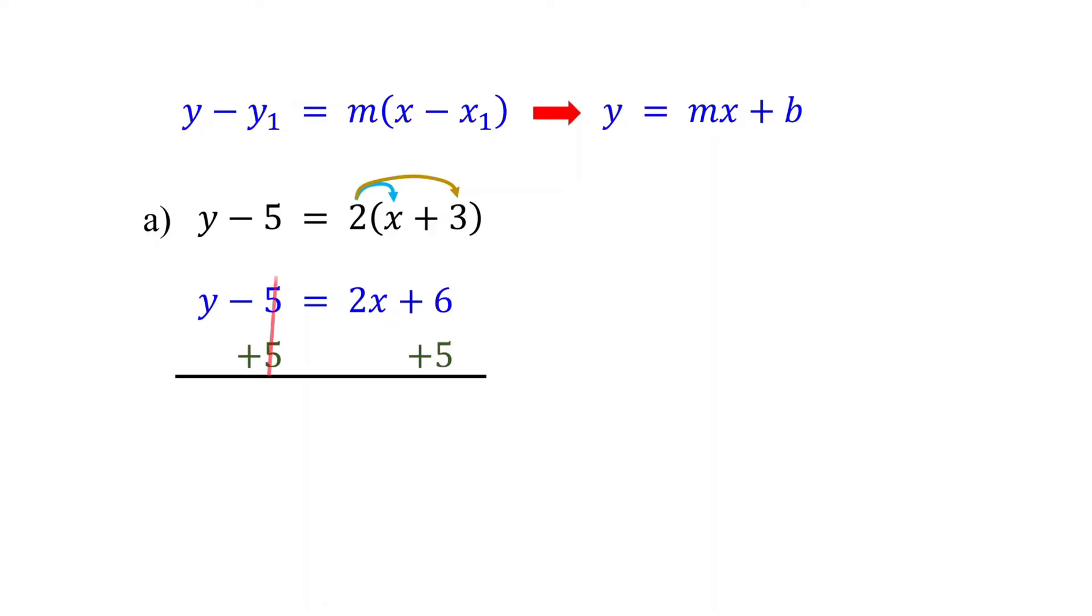On the left side, these cancel, leaving Y by itself. On the right side, 6 plus 5 is 11. That's it, this is the equation in slope intercept form, with a slope of 2 and a Y-intercept of 11.